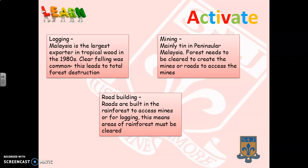Malaysia was the largest exporter of tropical woods in the 1980s. To access the few trees they wanted, loggers used a process called clear felling, where whole areas of rainforest were cut down. Not all the trees being cleared were actually used for logging — entire areas were destroyed just to access the target trees.